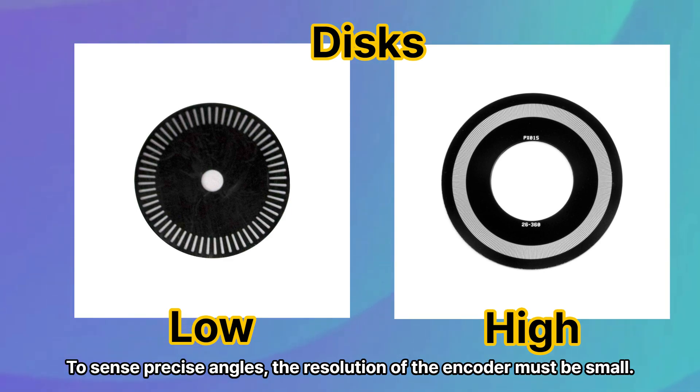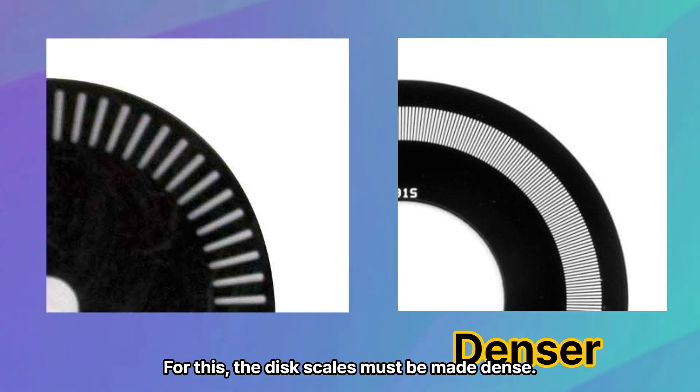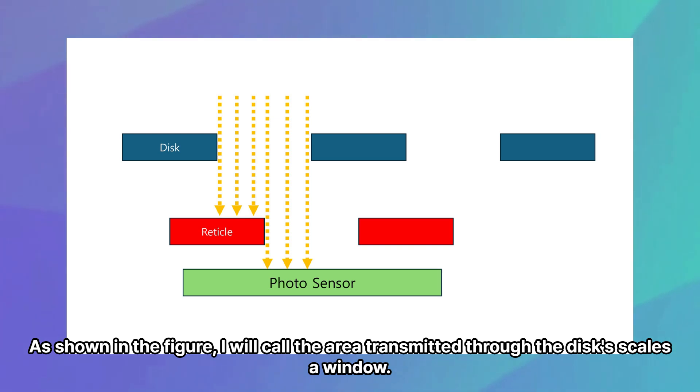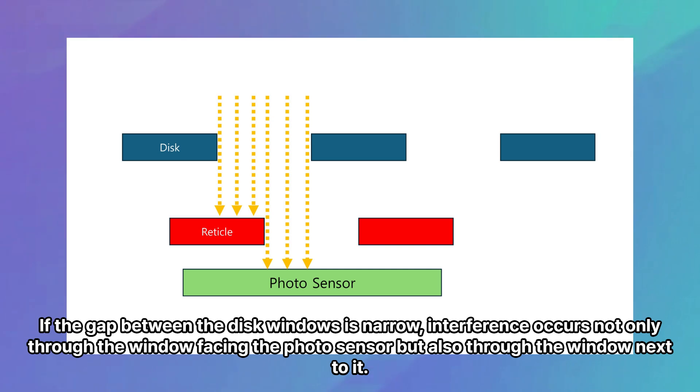To sense precise angles, the resolution of the encoder must be small. For this, the disk scales must be made dense. As shown in the figure, I will call the area transmitted through the disk scales a window. If the gap between the disk windows is narrow, interference occurs not only through the window facing the photosensor but also through the window next to it.